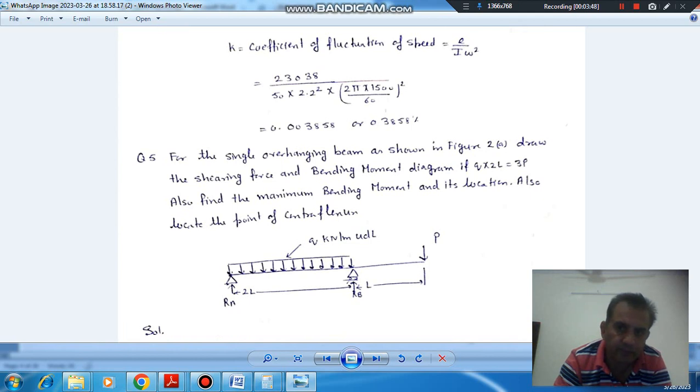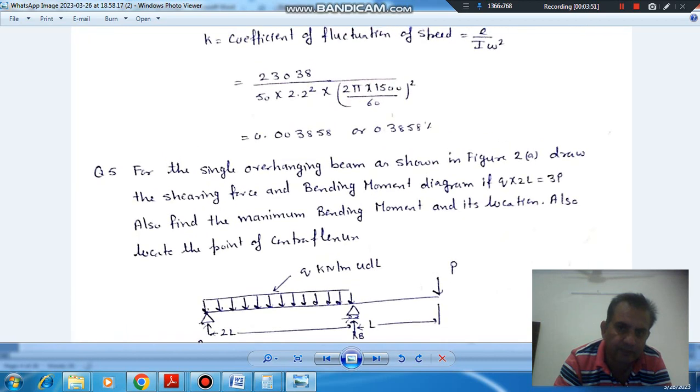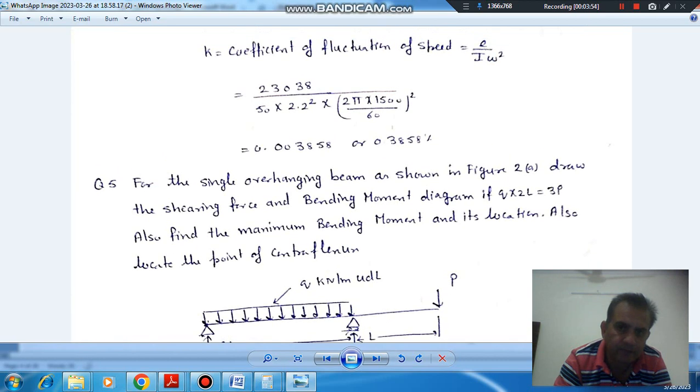Put in the values. I is MK squared, M is 50 kg and K is 2.2 radius of gyration, and omega is 2 pi n by 60. So 2 pi into 1500 by 60. That would be approximately 0.03858 or approximately 0.0386.